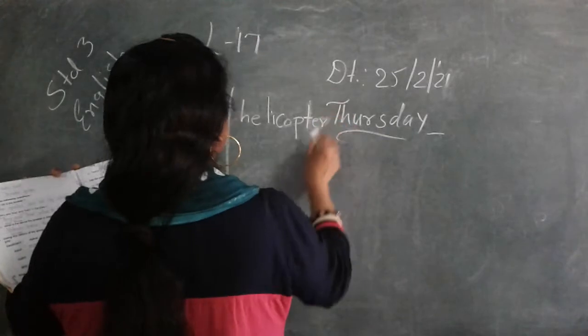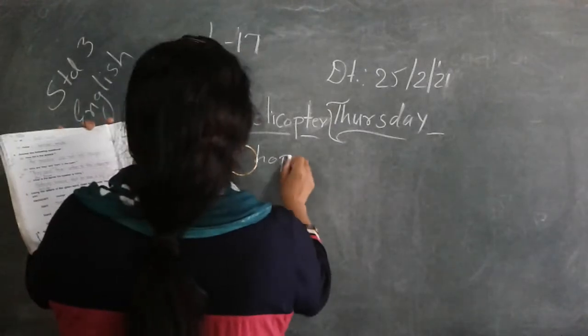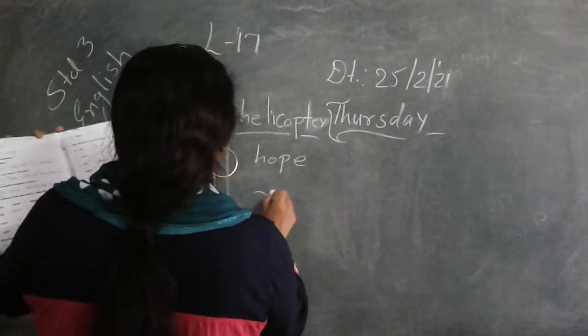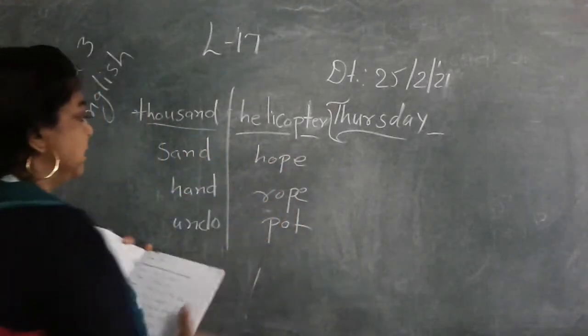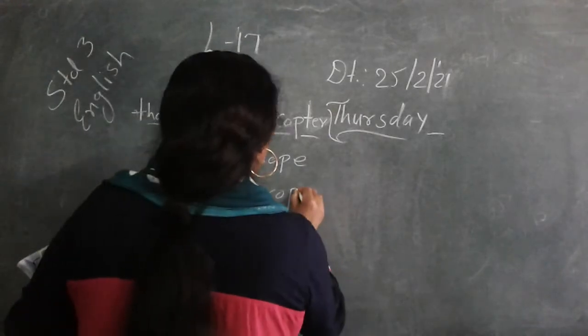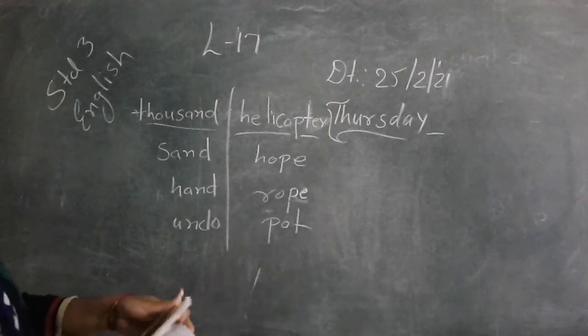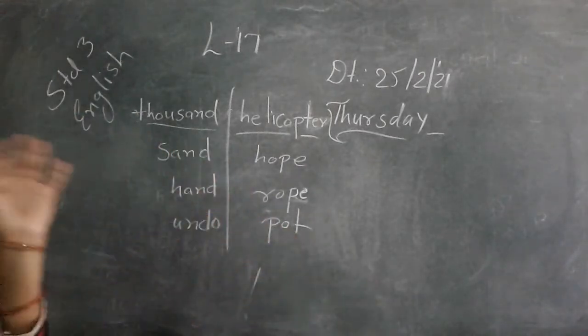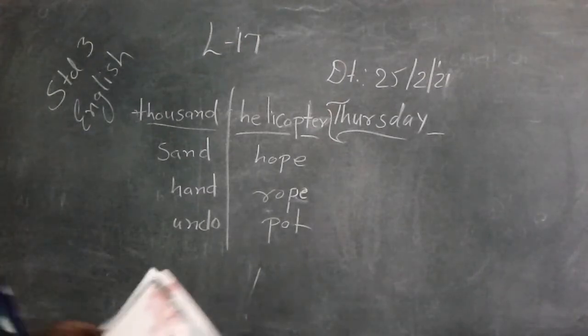And another word is helicopter H-E-L-I-C-O-P-T-E-R. Hope, H-O-P-E. Rope, R-O-P-E. And pole, P-O-L-E. These are 3 words. Send, hand, undo. Hope, rope, pole. Just write it.